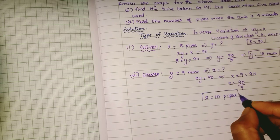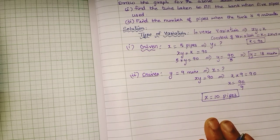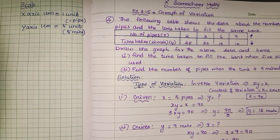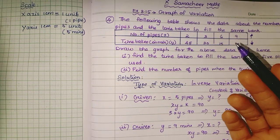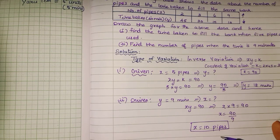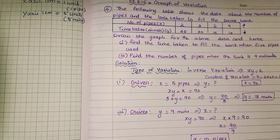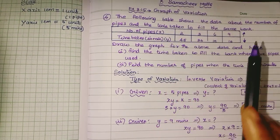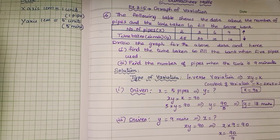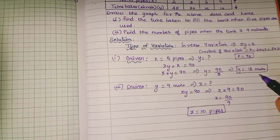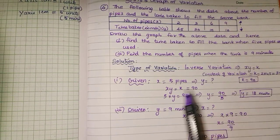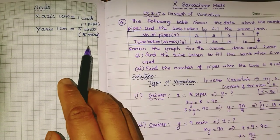Now it is a graph. Let's draw the graph. On the X axis, 1 centimetre is equal to — for values 2, 3, 6, 9. On the Y axis, 1 centimetre is equal to 5 minutes.